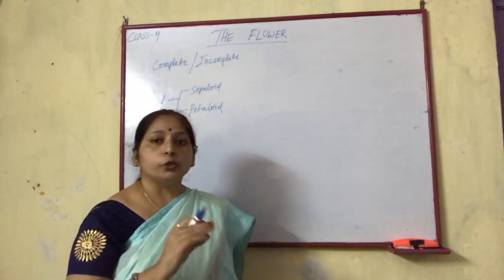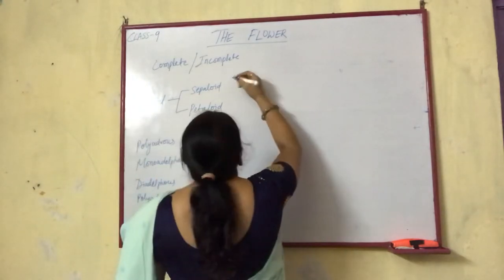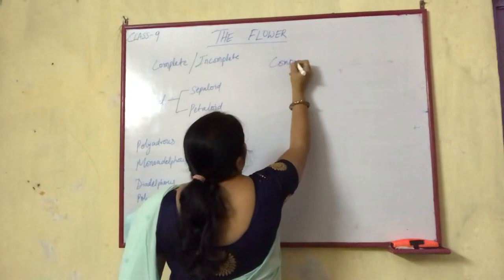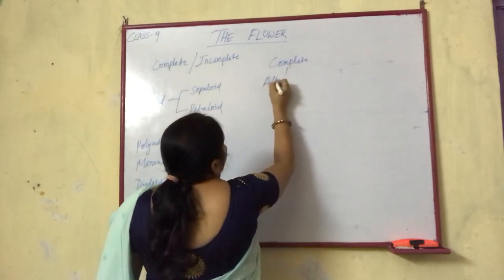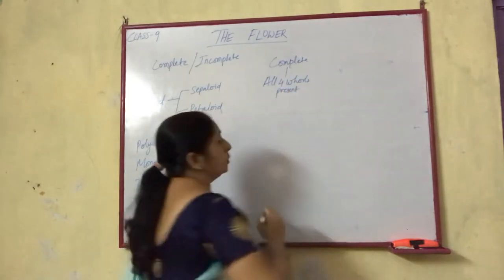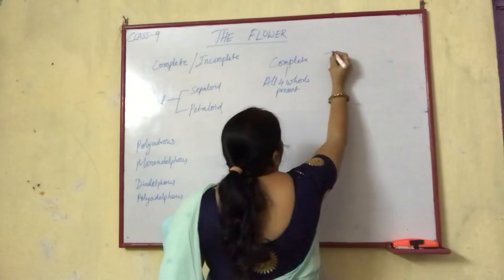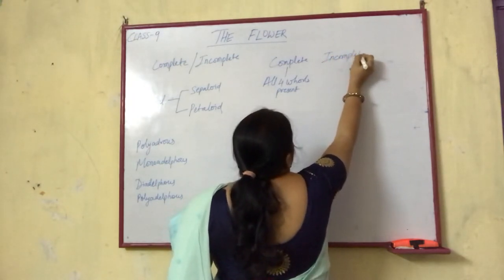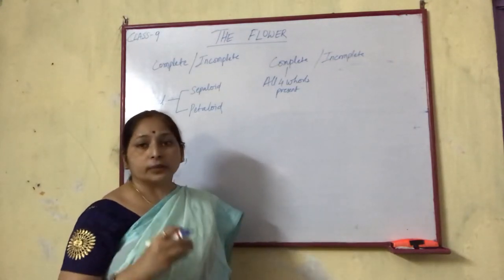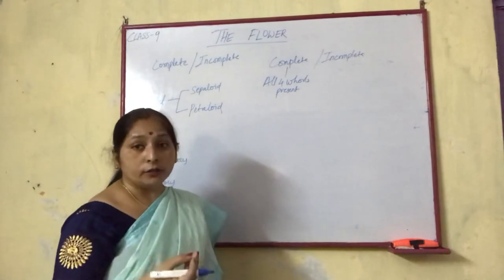Let's start with complete and incomplete flower. In a complete flower, all four floral whorls are present — calyx, corolla, androecium, and gynoecium. If all four are present, then the flower is a complete flower. In an incomplete flower, if any one of the floral whorls — calyx, corolla, androecium, or gynoecium — is absent, then it is an incomplete flower.